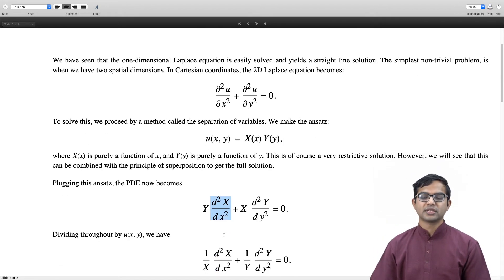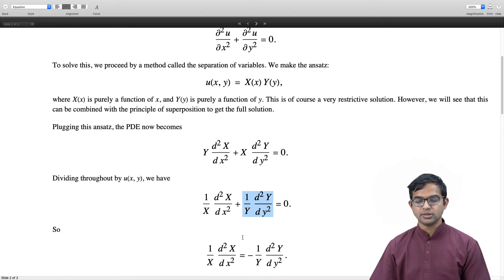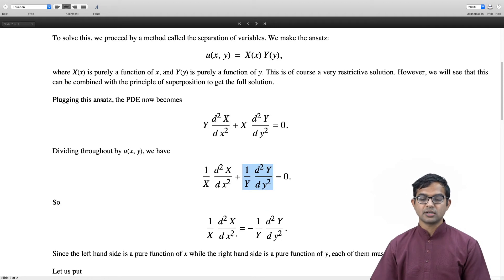If we divide throughout by u(x,y), which is X times Y, then Y cancels out in the first equation and X cancels out in the second. We are left with (1/X)(d²X/dx²) + (1/Y)(d²Y/dy²) = 0. Rewriting this as (1/X)(d²X/dx²) = -(1/Y)(d²Y/dy²) is very instructive.